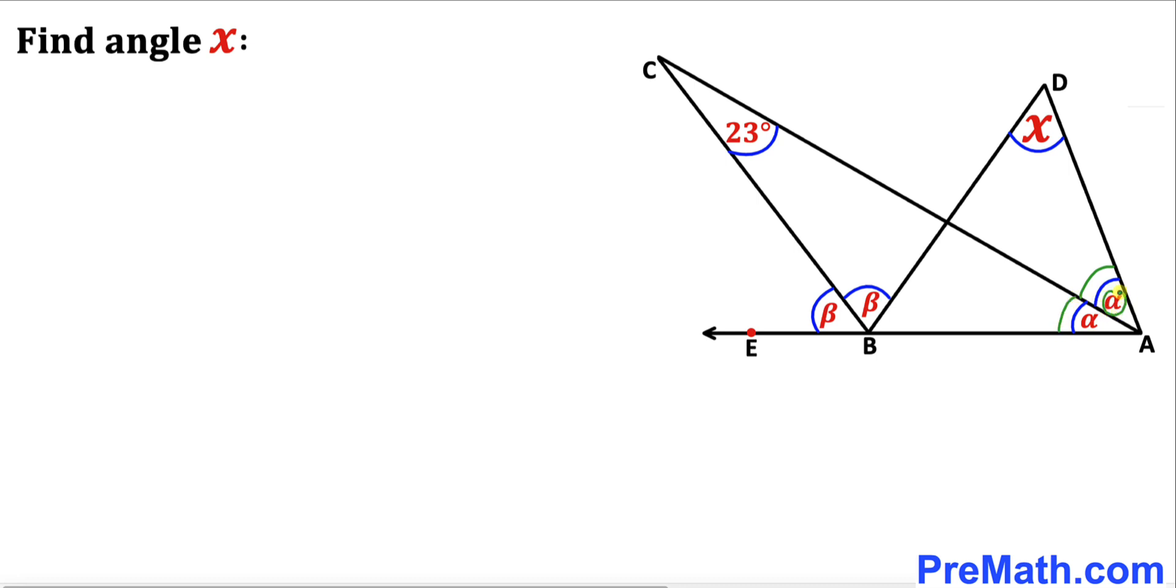In other words both are labeled as angle alpha. Moreover, angle CBD and angle CBE are congruent angles as well, and I call them angle beta. We've been given angle ACB as 23 degrees and we're going to calculate angle X. Please don't forget to give a thumbs up and subscribe.